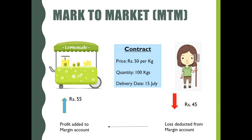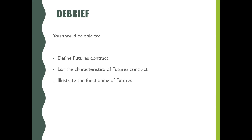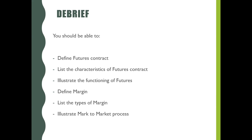We have come to the end of this module. Now you should be able to define futures contract, list the characteristics of futures contract, illustrate the functioning of futures, define margin, list the types of margin, and illustrate the mark-to-market process.